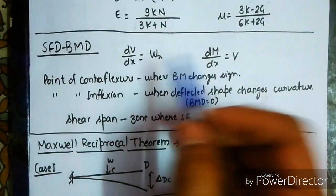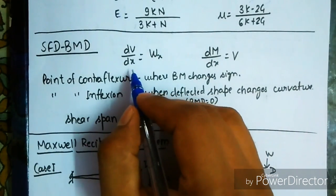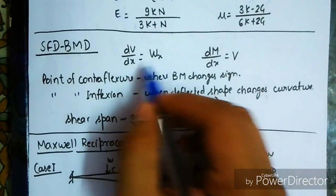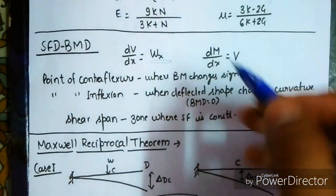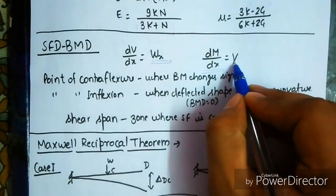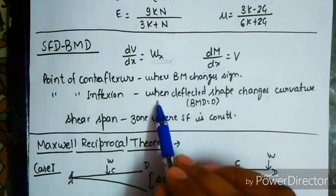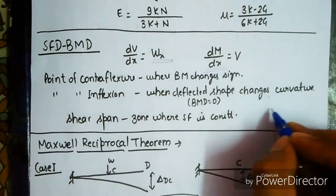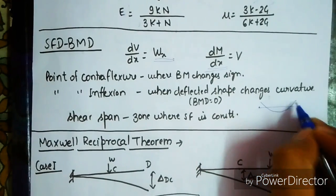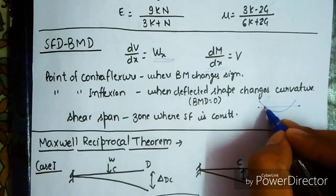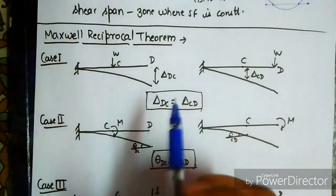In the SFD/BMD chapter, the rate of change of shear force with distance gives the loading intensity, and the rate of change of bending moment gives the shear force. Point of contraflexure is where bending moment changes sign; point of inflection is where the deflected shape changes curvature. Shear span is the zone where shear force is constant.